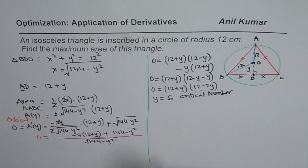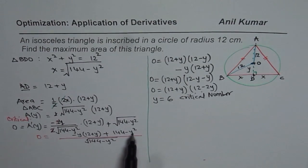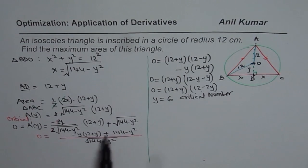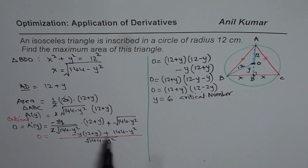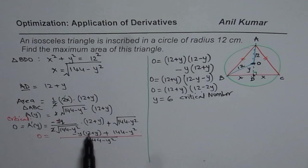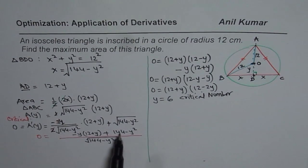You could have also expanded: Y times Y terms cancel, giving minus 12Y equals minus 144, and you get Y equals 6 that way as well.